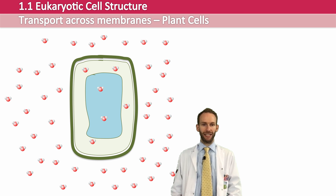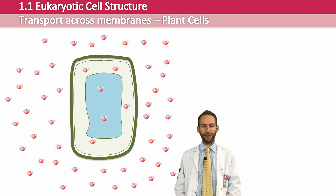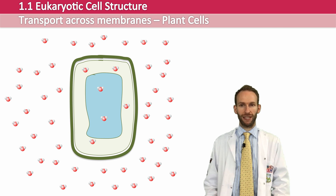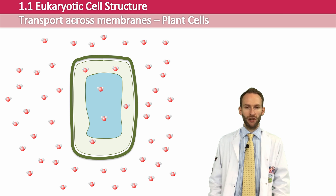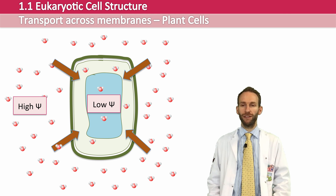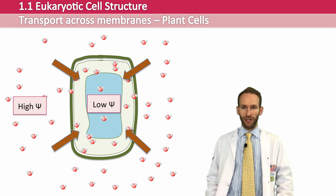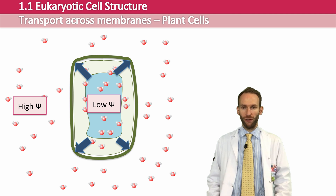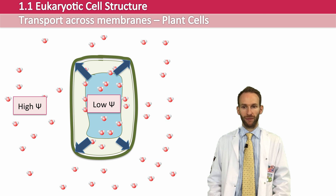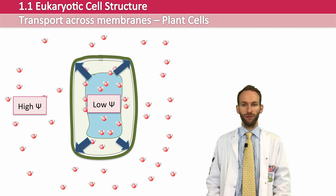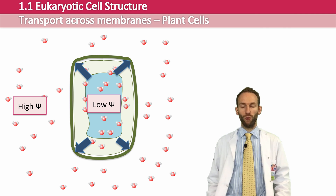Here's a plant cell that's been placed in pure water, which has a high water potential. There is water inside the cell itself, but there is also a lot of solutes dissolved inside the cell sap and in the cytoplasm. So water will want to move in from the area of high water potential to the area of low water potential inside the cell. As water moves in, the cell sap and cytoplasm actually start to swell and put pressure back on the cell wall. This is known as the pressure potential, which is always a positive value. The dissolved solutes create a solute potential, which is always negative, as it's always trying to draw water in.